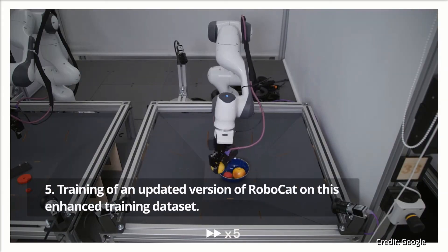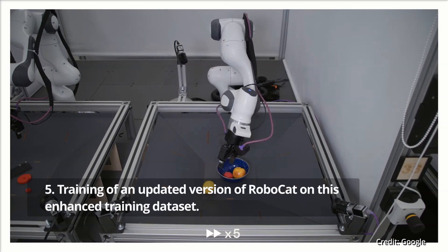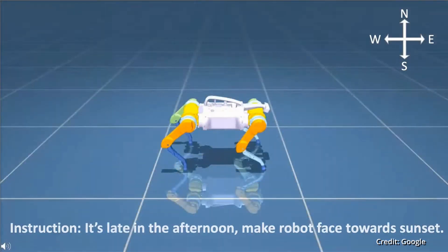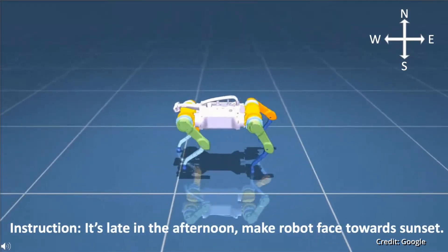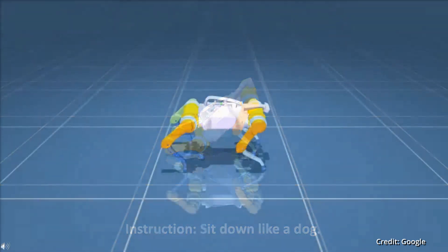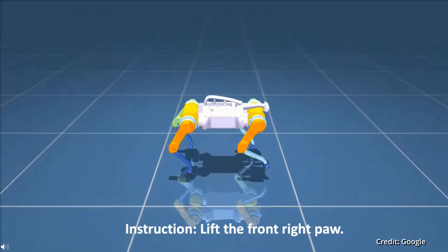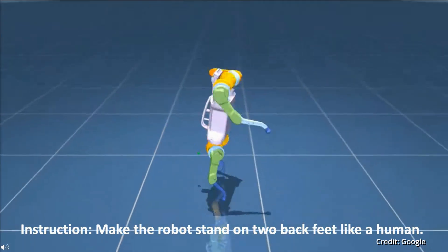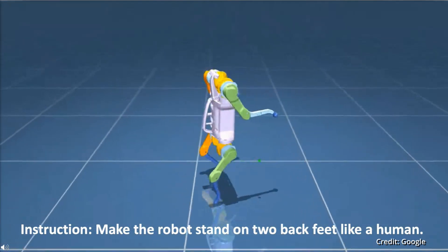Step 5: Training of an updated version of RoboCat on this enhanced training dataset. This sequence of five steps, followed religiously, not only assists RoboCat in mastering new tasks, but also improving its adaptability to using different robotic devices. In essence, RoboCat's capacity for independent learning and rapid self-improvement promises a leap towards the future with a new generation of more capable, general-purpose robotic agents.